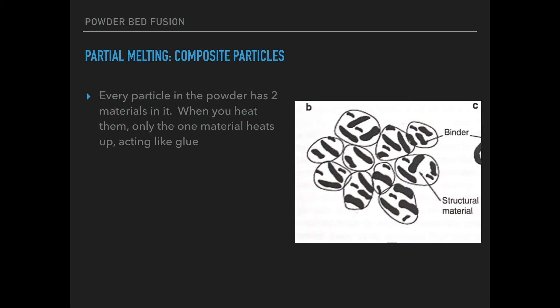Composite particles. For this type, you have two materials in every particle on the powder bed. Once again, you heat the material and one material acts like a glue for the other.